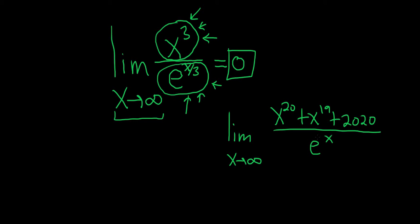Same thing, right? Because the exponential's on the bottom, it grows faster than this polynomial up top, no matter what exponent you put here. So this is always going to be zero.